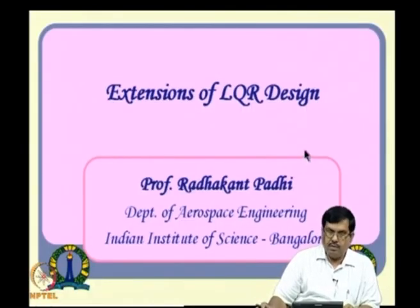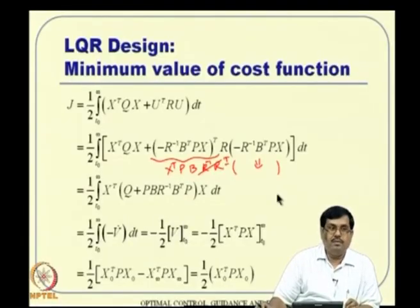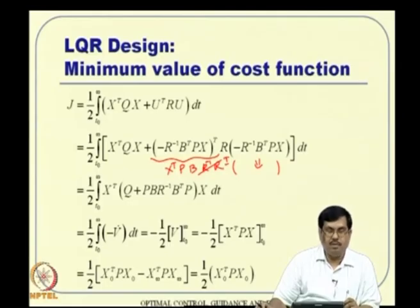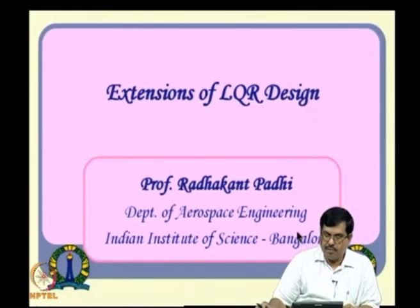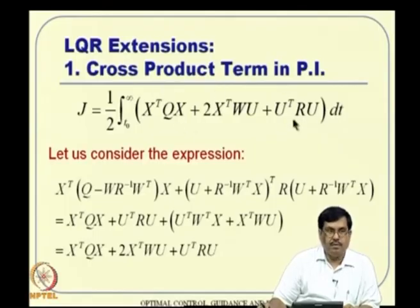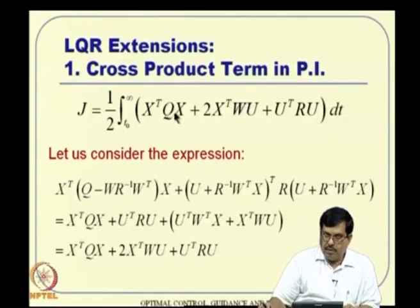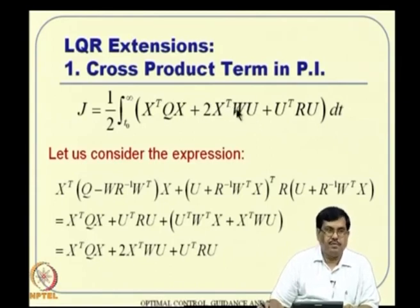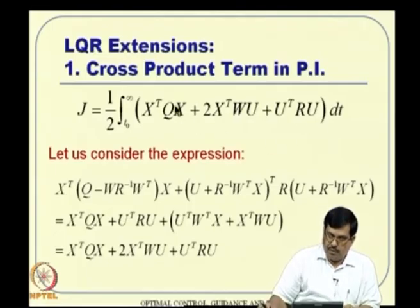Now we see some extensions of LQR design. The LQR procedure and infinite time formulation are established; we have global asymptotic stability for linear systems, proved the stability theorem, and derived the minimum cost. The first extension is the cross product term in the performance index. Originally we had X transpose Q X plus U transpose R U, but now we add a cross product term X transpose W U, where W is a weighting matrix — not necessarily square since X and U may have different dimensions.